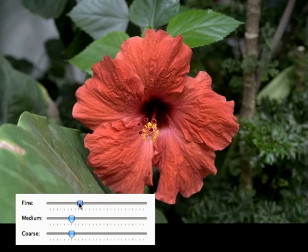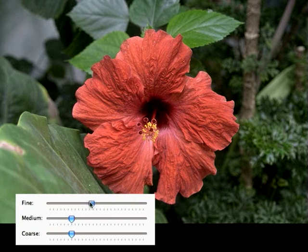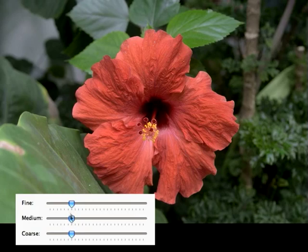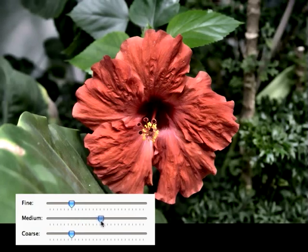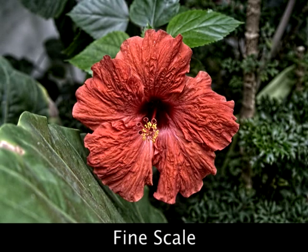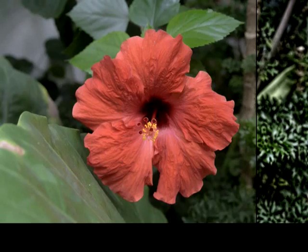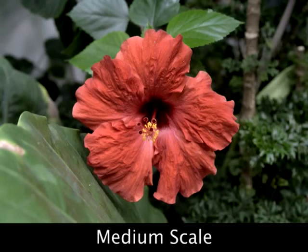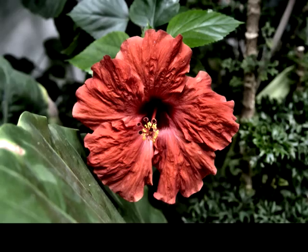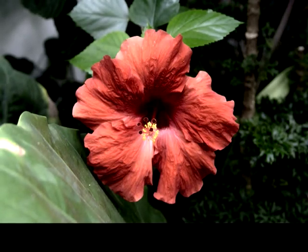We have implemented a simple tool for manipulating local contrasts at different scales, based on our multi-scale decomposition. Once the decomposition has been computed, the different detail layers can be manipulated at interactive rates. Note that the manipulation range is very wide — it takes an extreme manipulation to cause artifacts to appear. Manipulating the medium detail layer can add depth to the image, while coarse detail manipulation is closer to a global contrast adjustment.